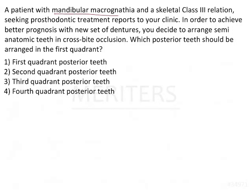A patient with mandibular macrognathia and a skeletal class 3 relation seeking prosthodontic treatment reports to your clinic. In order to achieve better prognosis with a new set of dentures — this is a completely edentulous patient with class 3 and macrognathia — you decide to arrange semi-anatomic teeth in crossbite occlusion. Which posterior teeth should be arranged in the first quadrant?